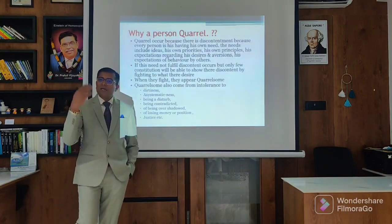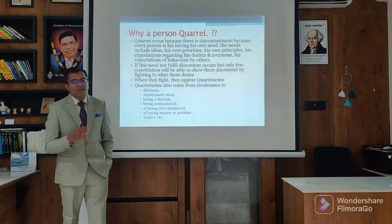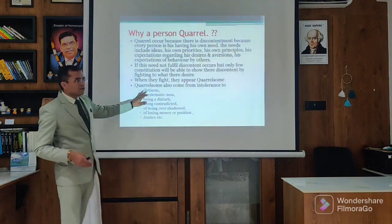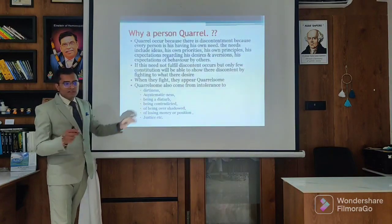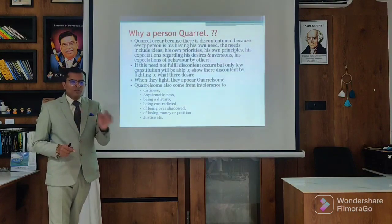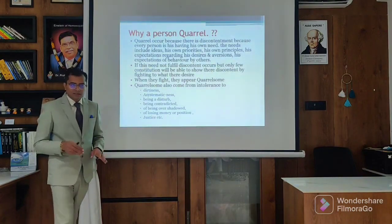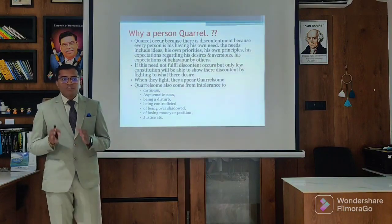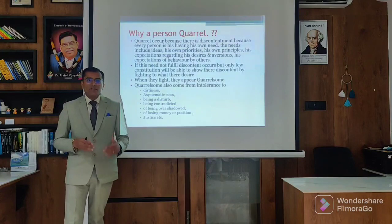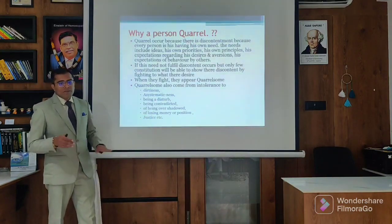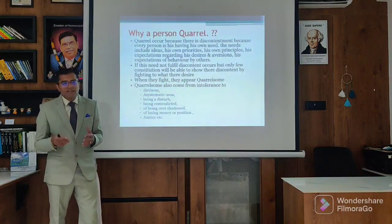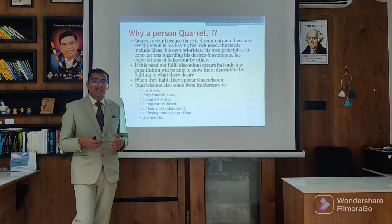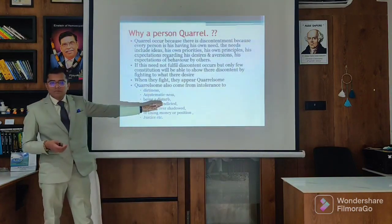Some may accept it, some may reject it - in the rejections they fight, so they appear quarrelsome. The quarrelsomeness comes from different points of view. When the quarrelsomeness comes from dirtiness - there is dirtiness in the family, things are not proper, so they argue about it. Quarrelsomeness out of a-systematicness - certain people want everything in a systematic place, and if there is chaos they become argumentative. Some remedies do not want to be disturbed, like Prionium, Berberis, Mezereum - they are sensitive to interruption, and when sensitive to interruption they go into a state of quarrelsomeness. Some people being contradicted - if someone contradicts their wish, that goes into a state of quarrel. Some being overshadowed or losing money or position - certain people become quarrelsome because their need is not fulfilled. And certain people become quarrelsome because they do not want injustice in the family - like Causticum, highly sensitive to injustice in the family.